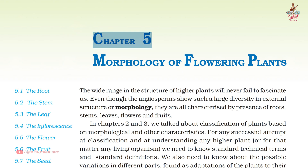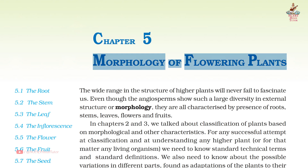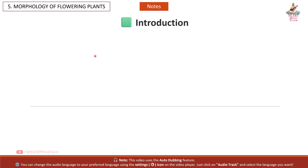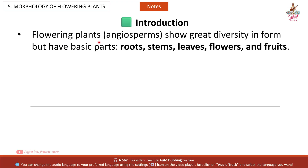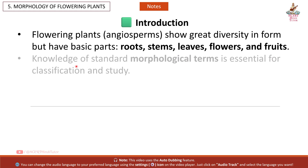Chapter 5: Morphology of Flowering Plants. Short Notes and Summary from Class 11, Subject Biology. Introduction: Flowering plants, or angiosperms, show great diversity in form but have basic parts — roots, stems, leaves, flowers, and fruits.